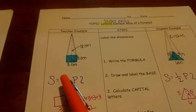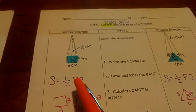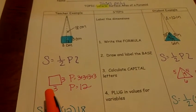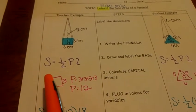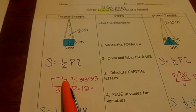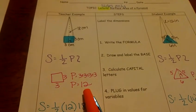So surface area is equal to half perimeter of the base times your slant height. Step number two. Draw and label your base. My base is a square, so I've got it drawn and labeled. Perimeter is 3 plus 3 plus 3 plus 3. My perimeter is 12.